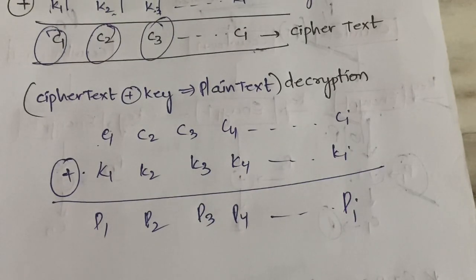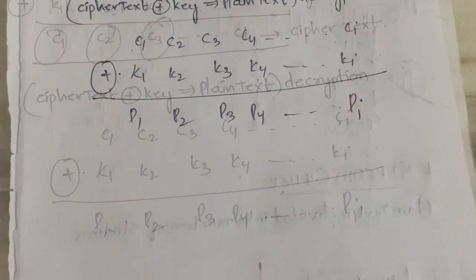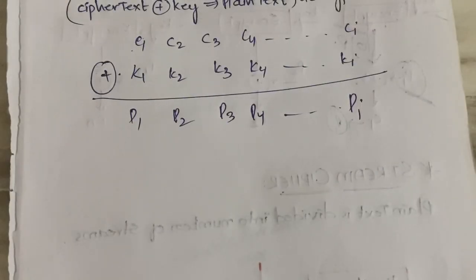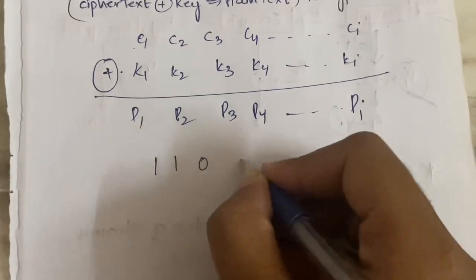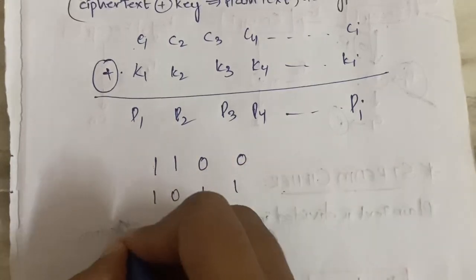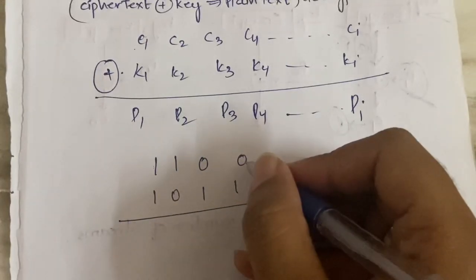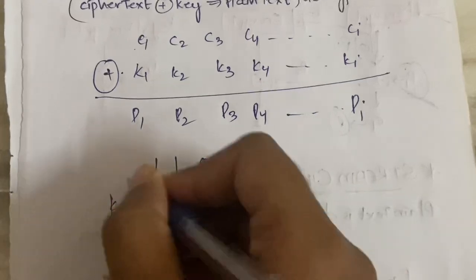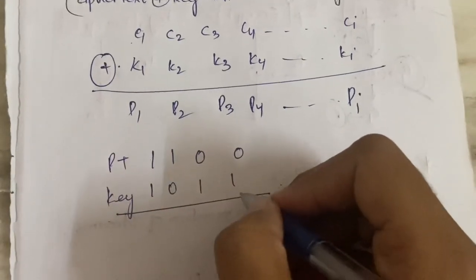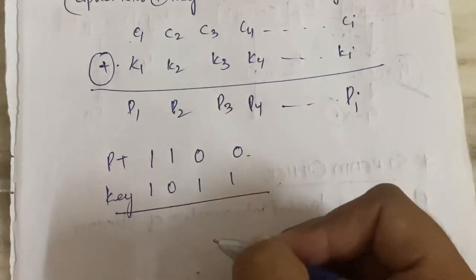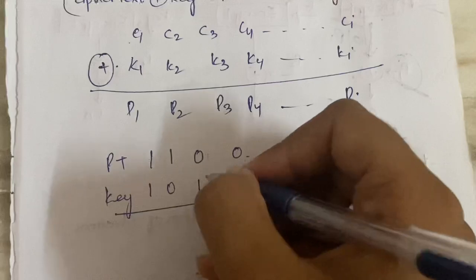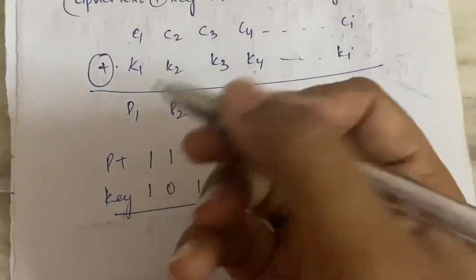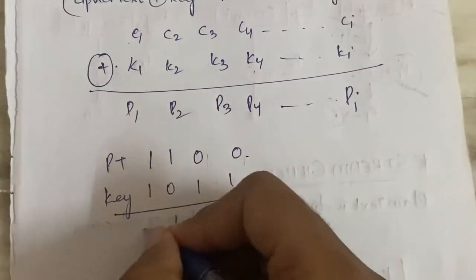Let me give you an example for more clarity. You know XOR: if both values are different you get 1 (true), if both values are same you get 0 (false). Suppose the plain text is 1100 and the key is 1011. Performing XOR: 1 and 1 are the same so 0; 1 and 0 are different so 1; 0 and 1 are different so 1; 0 and 1 are different so 1. The cipher text is 0111.